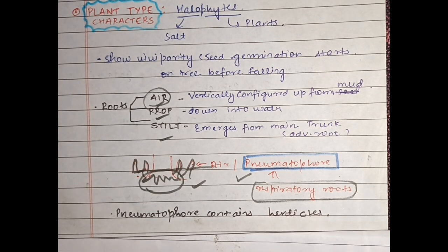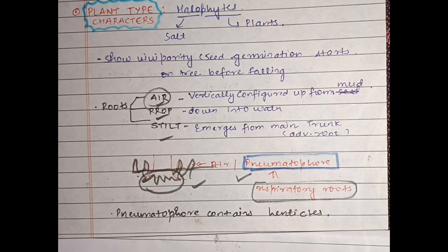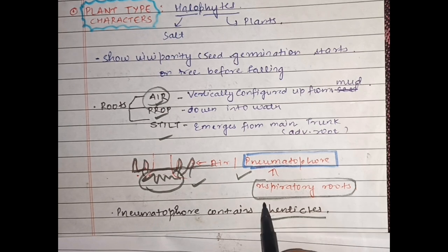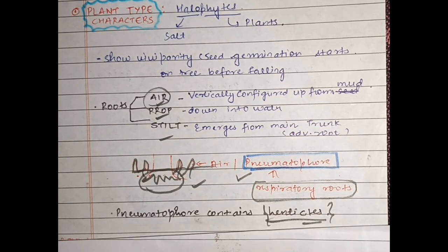Yeh jo respiratory roots hote hain woh ya toh stomata ke through breathing karte hain ya most of the time lenticels ke through breath lete hain. Lenticels stomata se kaafi alag hote hain — yeh bas choti-choti openings hoti hain. We call them respiratory roots because the pneumatophore contains lenticels, and lenticels help respiratory gas exchange.